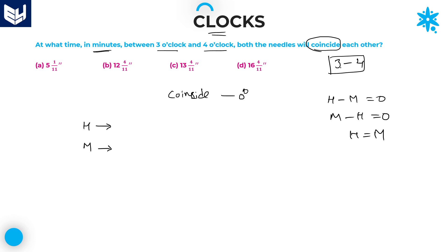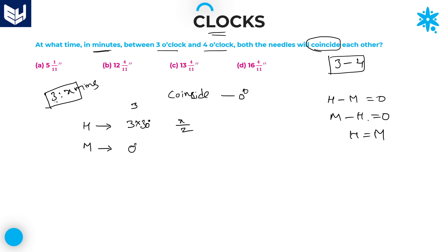Exactly at 3 o'clock, the minute's hand is at the 12th position, so its angle is 0 degrees. The hour's hand is at 90 degrees because for every 1 hour, the hour's hand covers 30 degrees — so 3 × 30 = 90. Let us say the hands coincide at 3 hours x minutes. In those x minutes, the hour's hand moves x/2 degrees (half degree per minute), and the minute's hand covers 6x degrees (6 degrees per minute).